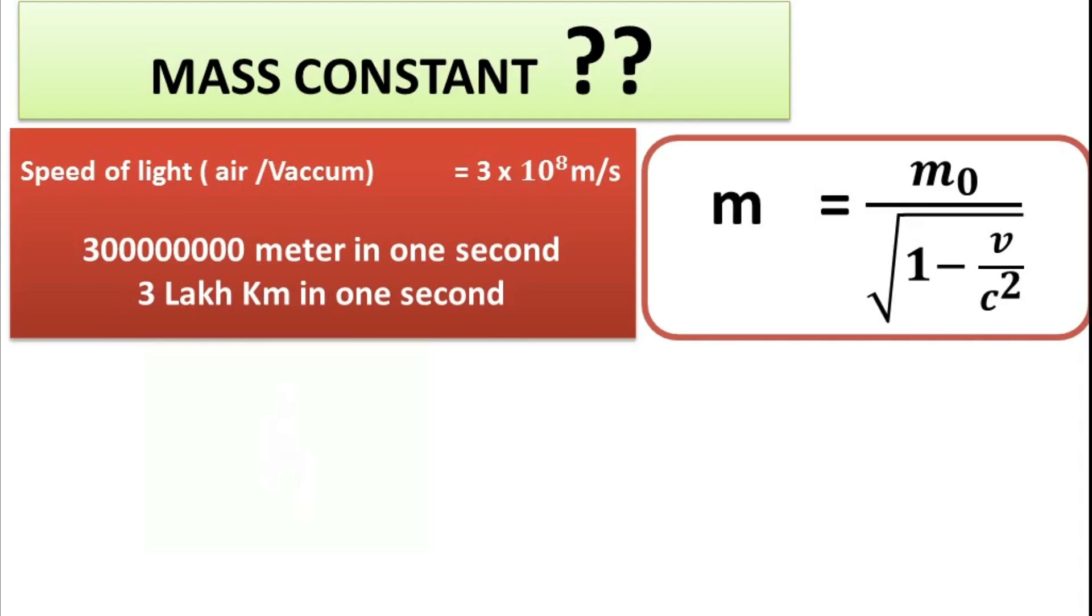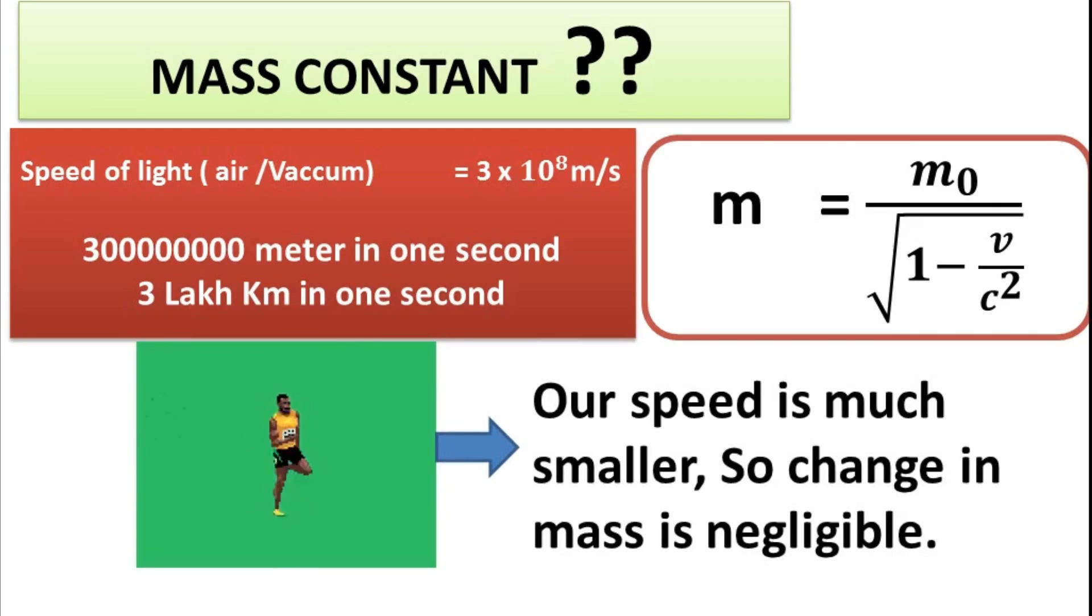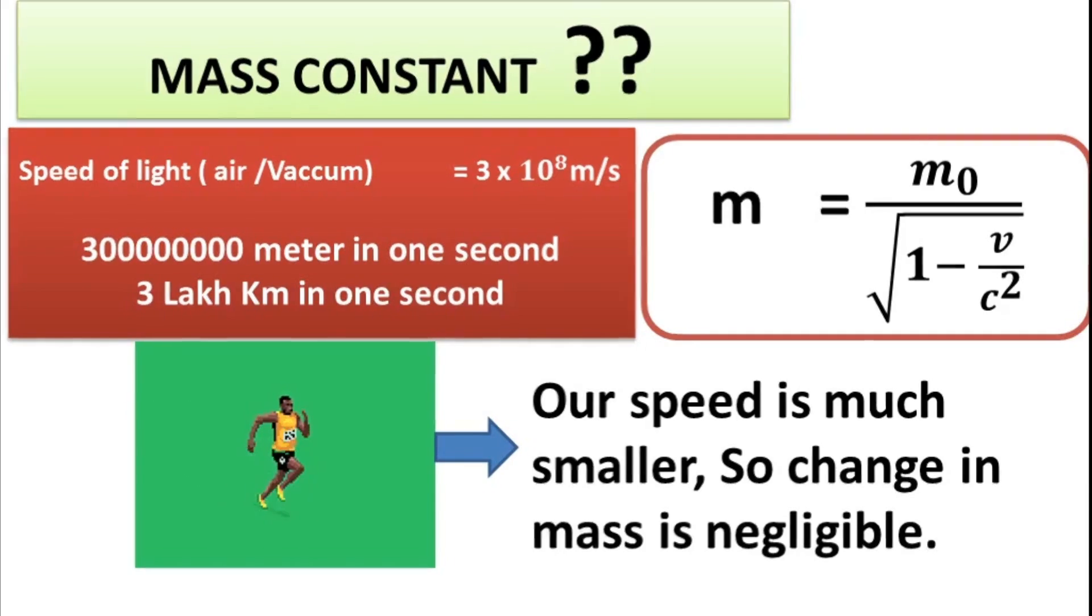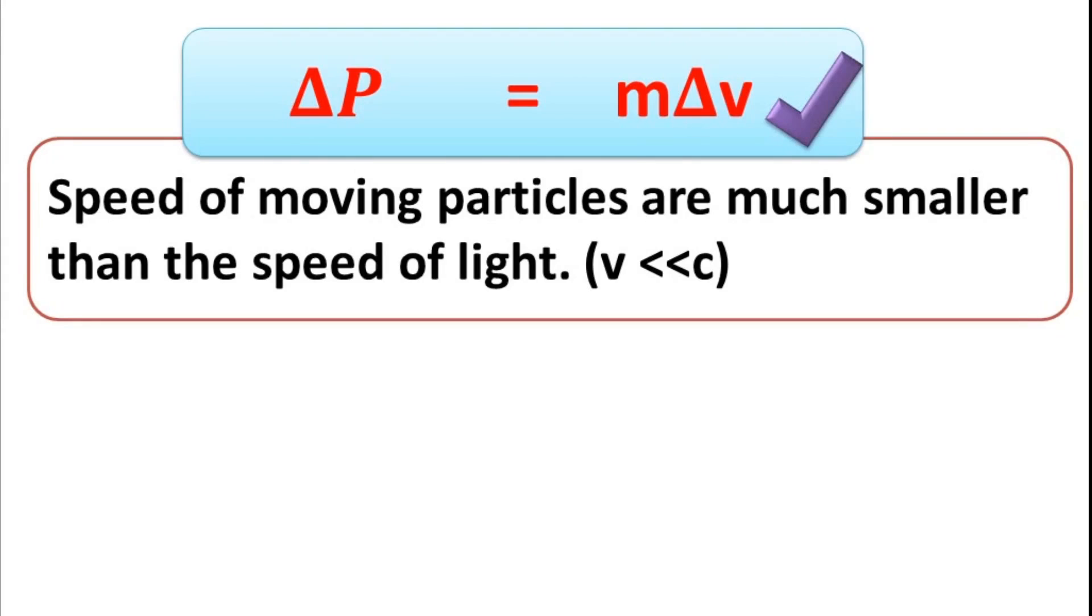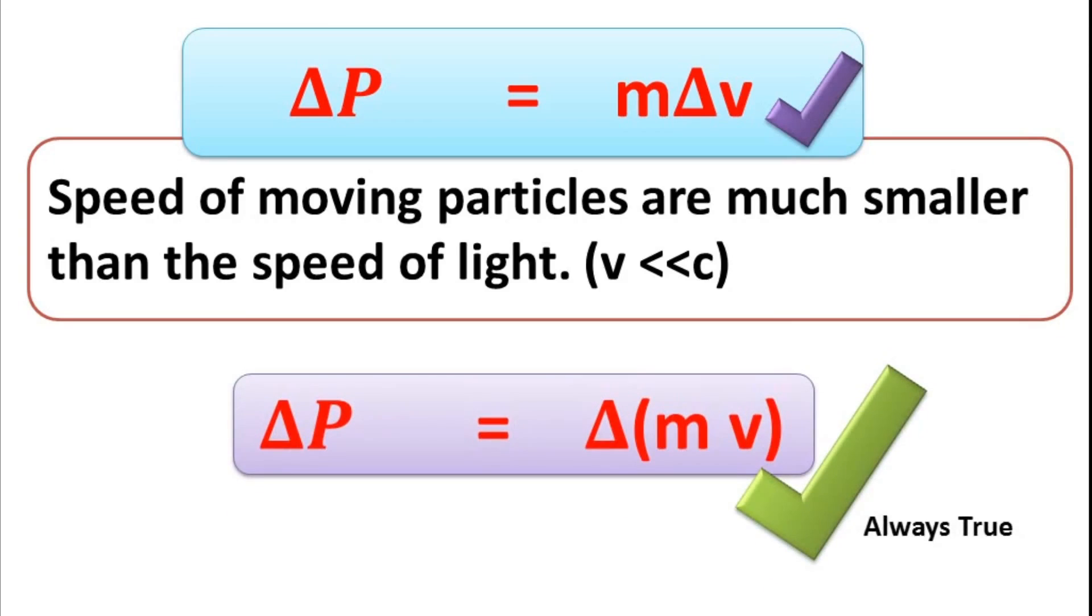Now, why do we say our mass is constant? Because even Usain Bolt cannot run in that speed. Our speed is much, much smaller than the speed of light. So, change in mass is very, very less. So, we consider it as negligible. So, our relation delta P is equal to M delta V is true only when the speed of moving particles are much smaller than the velocity of light. Or V is much, much smaller than velocity of light. But remember, true relation is always delta P is equal to delta M V.